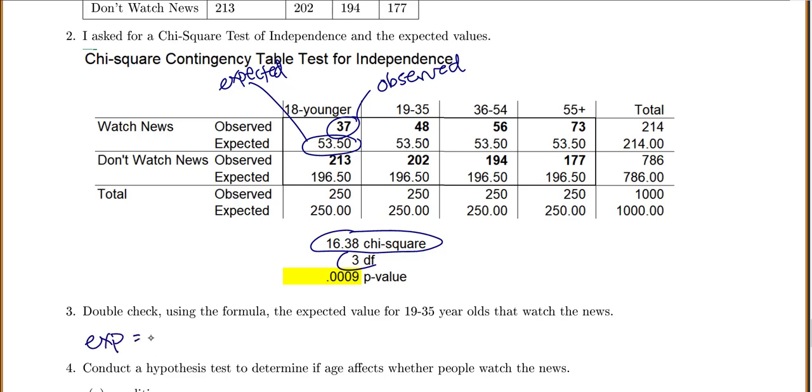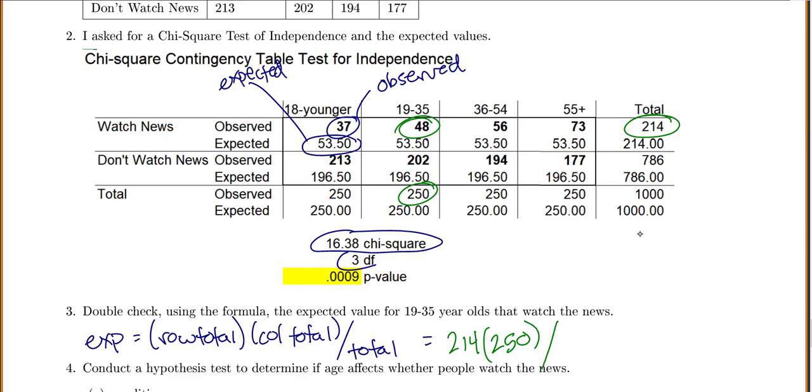Remember to get an expected value, you do your row total times your column total divided by your overall total. So in our case, for the 19 to 35 year olds, we would look at the row total of 214 times the column total of 250 divided by our grand total of 1,000.